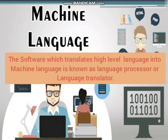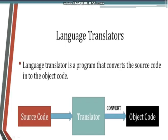The software which is used to translate a high-level language program to machine level language is called a language processor or language translator. A language translator is a program that converts the source code to object code. Source code refers to the high-level language, and object code refers to the low-level machine language.